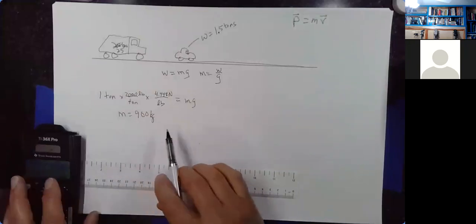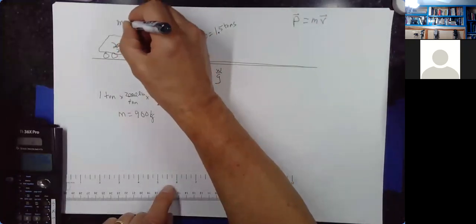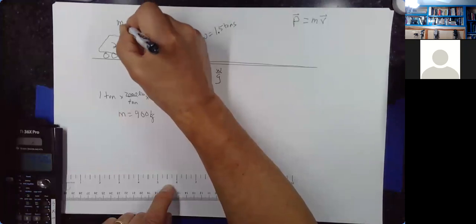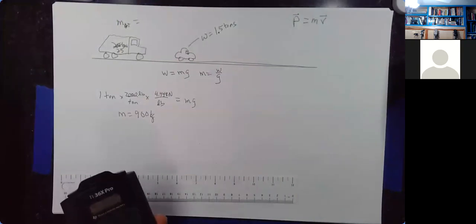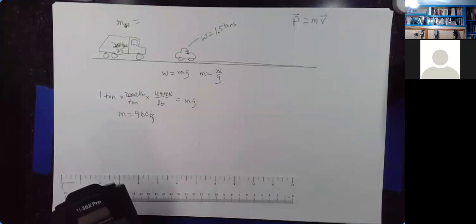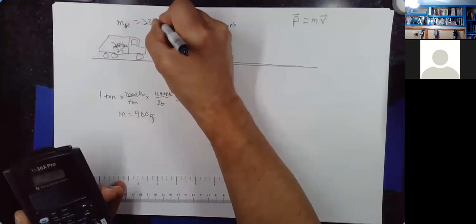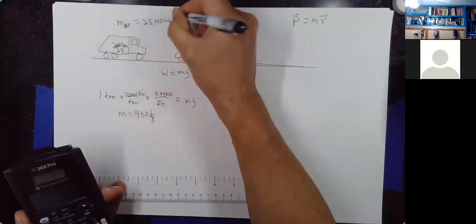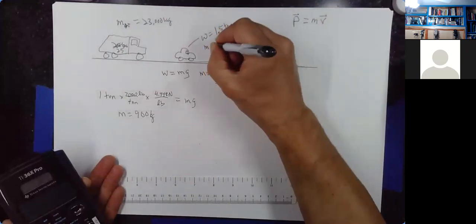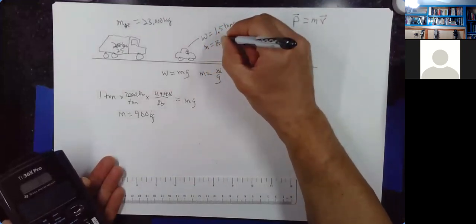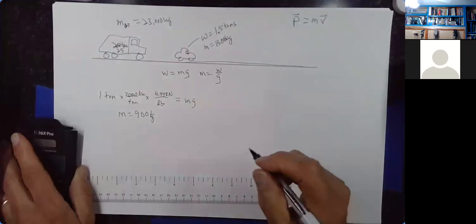One ton has a mass of about 900 kilograms, so we can figure those out. The mass of the garbage truck is 25 times that, so about 23,000 kilograms roughly. And then the mass of the 1.5-ton car is just going to be about 1,300 kilograms. So we're going to imagine a collision between these two things.